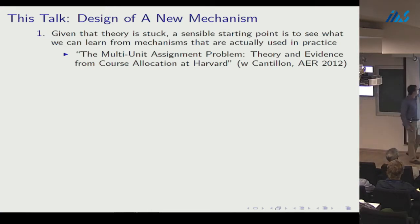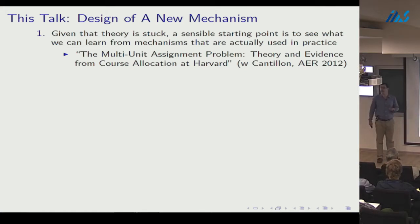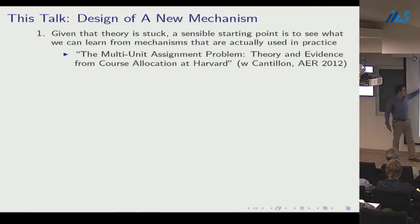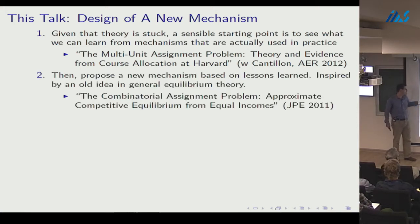Since the theory is stuck, we tried to see what we could learn from mechanisms actually used in practice. The dictatorship theorems have not corresponded to the actual use of dictatorship mechanisms in practice. We use nice data from the course allocation system at Harvard Business School, then propose a new mechanism based on lessons learned.